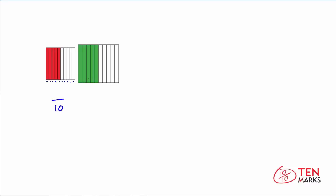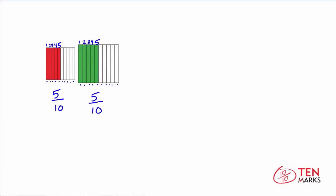Now let's count how many parts are in the whole that has the green shading: 1, 2, 3, 4, 5, 6, 7, 8, 9, 10. This whole is also divided into 10 parts, so the denominator is 10 as well. Now let's count how many parts are red: 1, 2, 3, 4, 5 parts are red in the model on the left. So this shows 5 tenths. Over here in green, let's count those: 1, 2, 3, 4, 5 - this also shows 5 tenths. But are these two fractions equal? They're not equal, and the reason is that the models are different size wholes. The model on the right is larger than the model on the left, so you can't compare these and say that 5 tenths on the left equals the same 5 tenths in green. Just like other fractions, you can't compare fractions unless they are out of the same size whole.